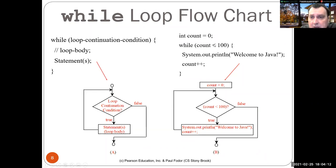So for instance, if you want to print 100 times 'Welcome to Java', you start with initializing the counter with zero. And then while the counter is less than 100, print 'Welcome to Java', increment the counter.